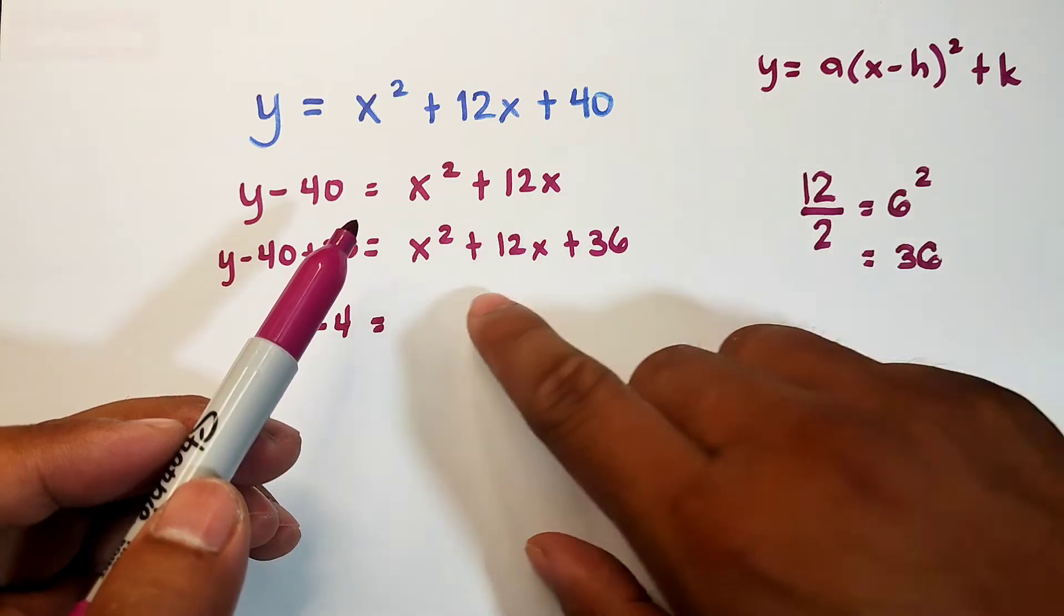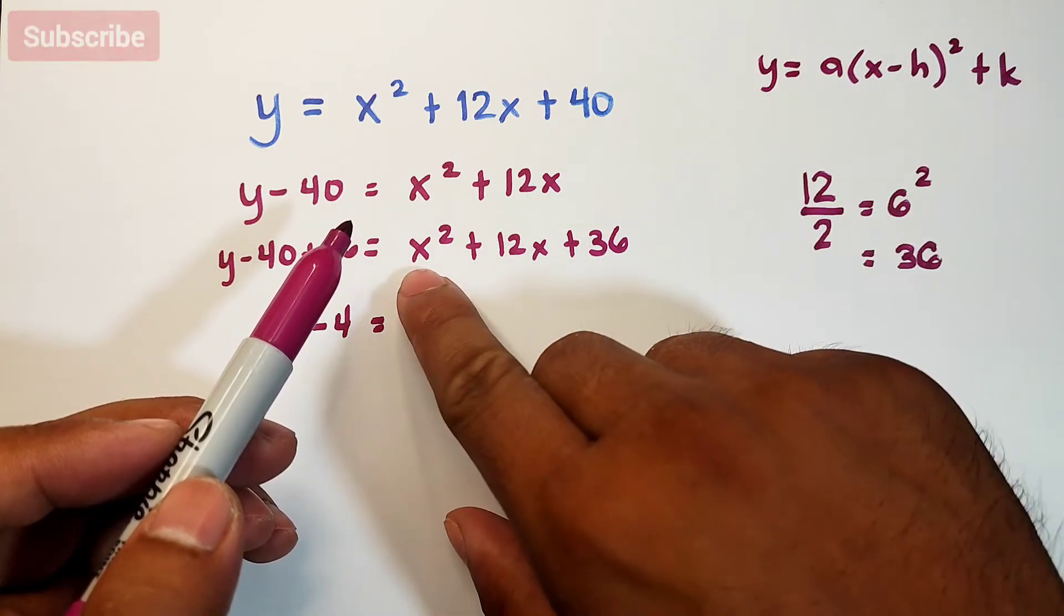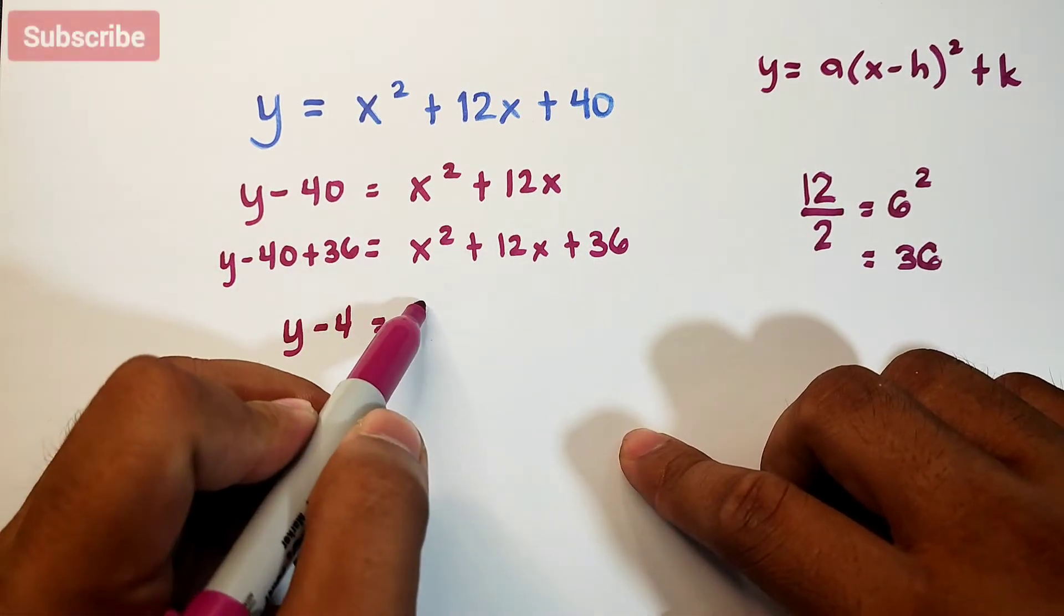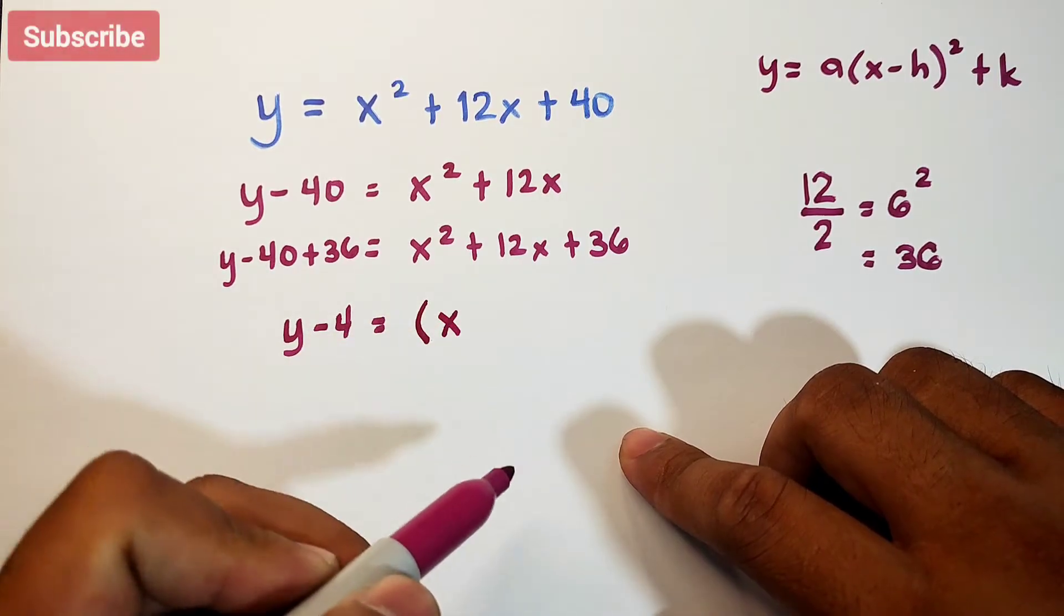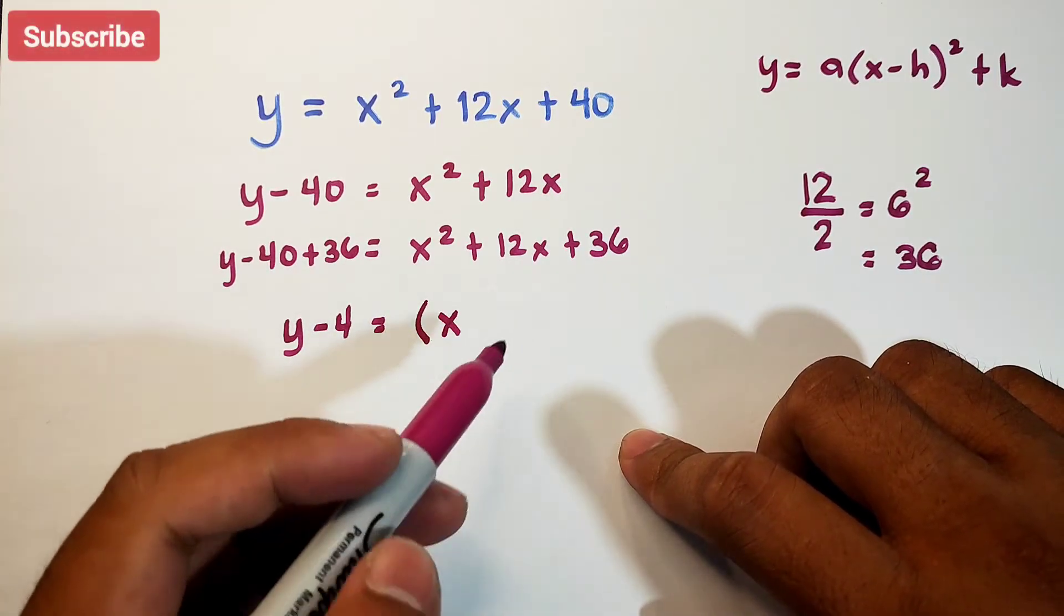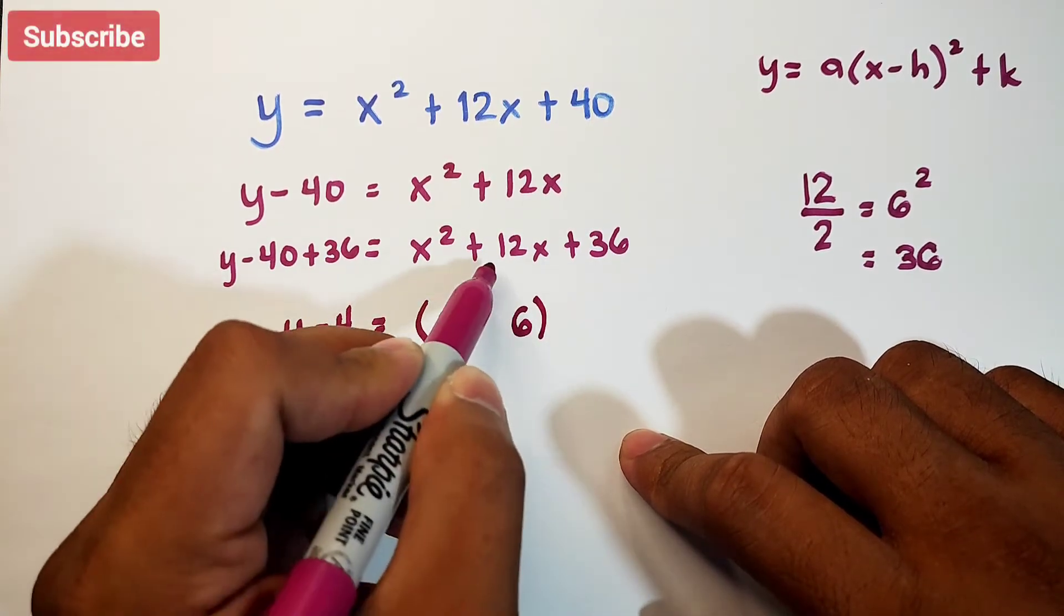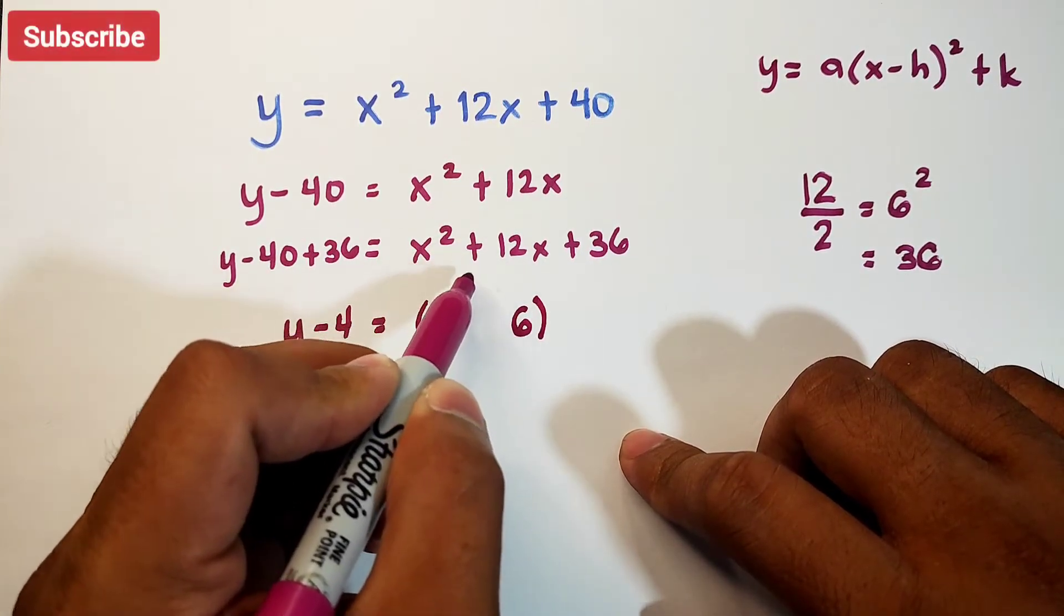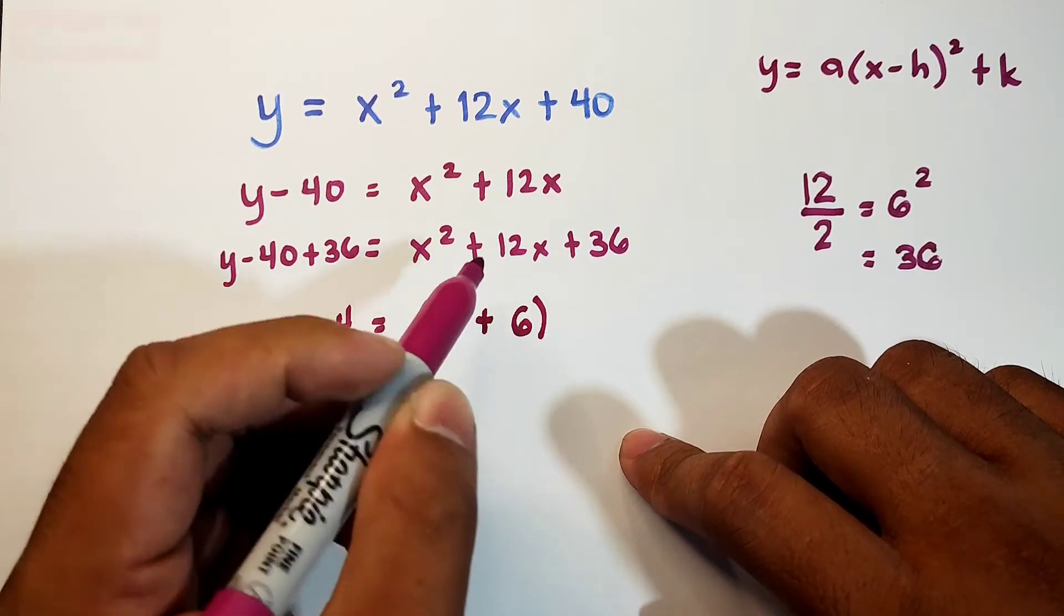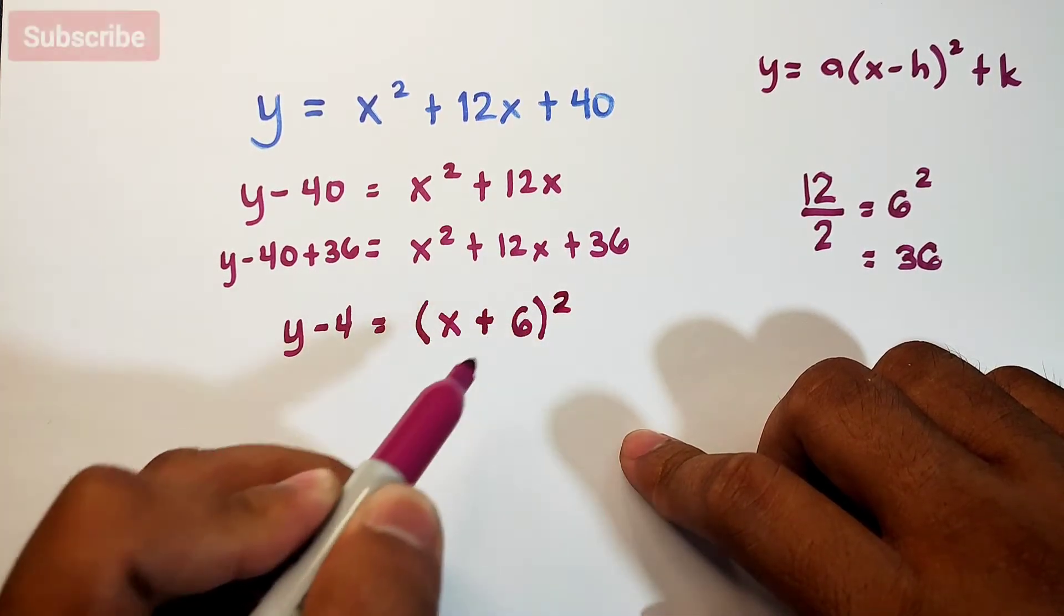To get this form, get the square root of x squared, that is x. Get the square root of 36, that is 6. Copy the sign of the middle term, which is plus. Then square the binomial.